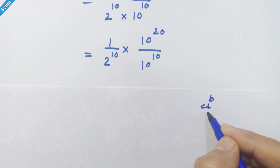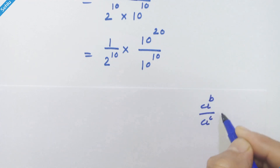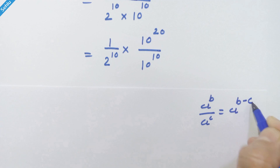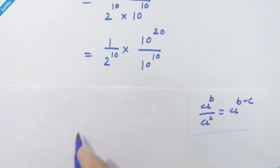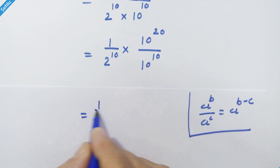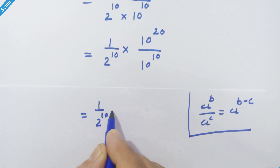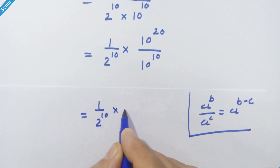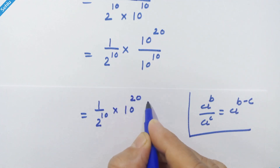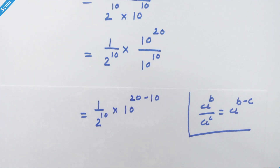Now for this part we will apply the rule which says if we have a raise to b upon a raise to c, then it can be written as a raise to b minus c. So here we can write it like 1 upon 2 raise to 10 into 10 raise to 20 minus 10.